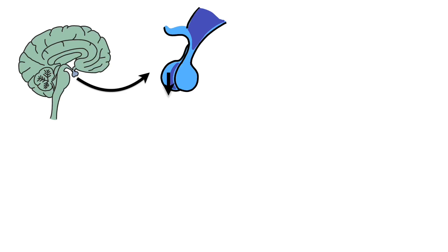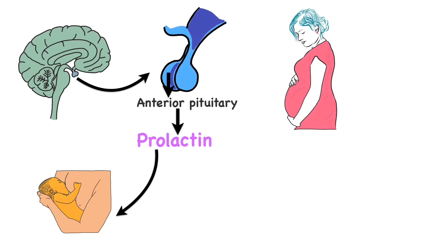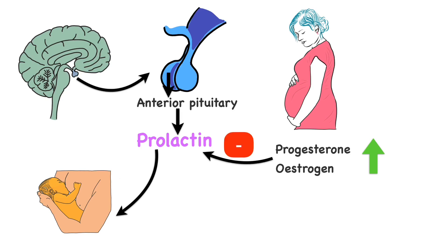Prolactin is secreted by the anterior pituitary gland, and prolactin is needed for breast milk production. However, prolactin does not produce milk during pregnancy, because throughout the pregnancy the production of prolactin is inhibited by estrogen and progesterone. Therefore, they inhibit the formation of breast milk during pregnancy.